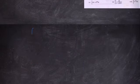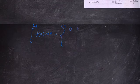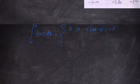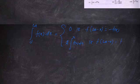The first property is: integration of f of x dx from 0 to 2a equals 0 if f of 2a minus x is equal to minus f of x; and equals 2 into integration of f of x dx from 0 to a, if f of 2a minus x is equal to f of x.